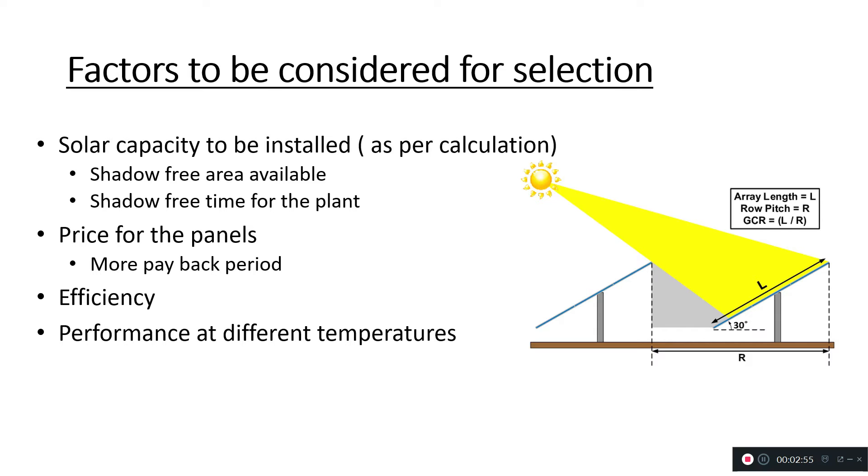Suppose you want to install more solar capacity in the particular available area. First thing is you increase the capacity of the panel - you choose a panel with more power output, maybe 400 watt peak or 450 watt peak.